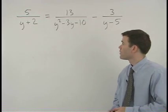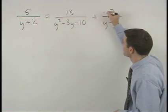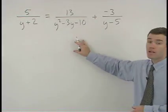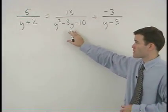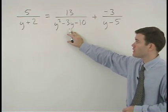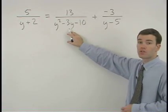Start this problem by changing the minus three to plus a negative three. To find the common denominator notice that we must factor y squared minus three y minus ten as y minus five times y plus two.